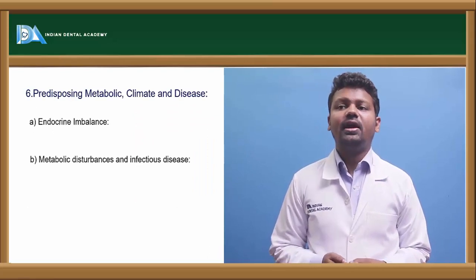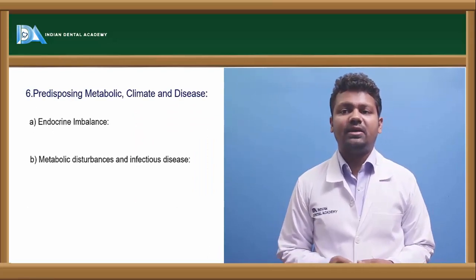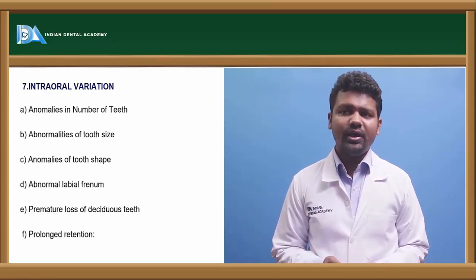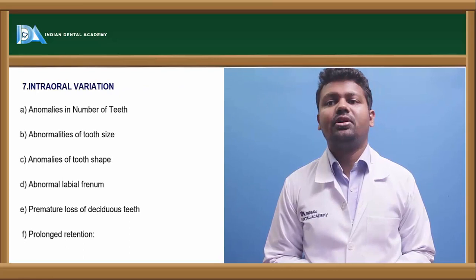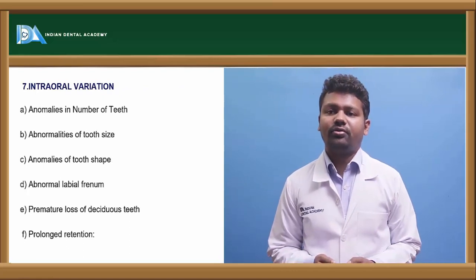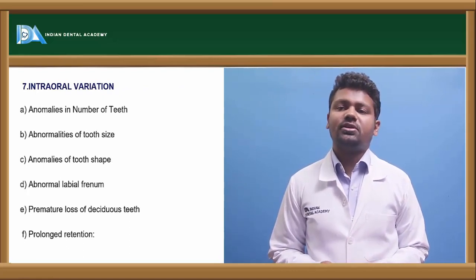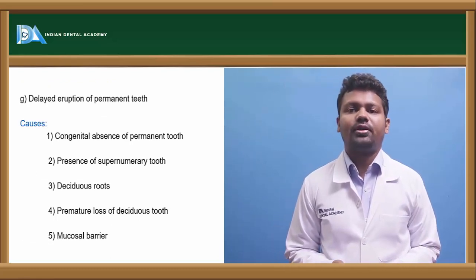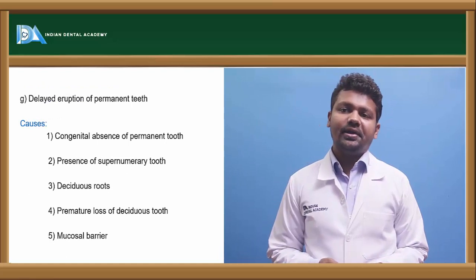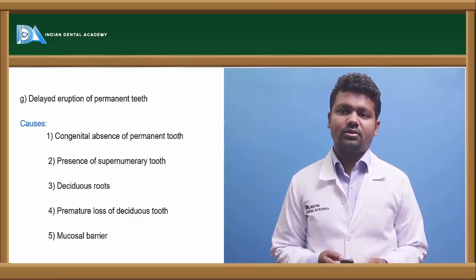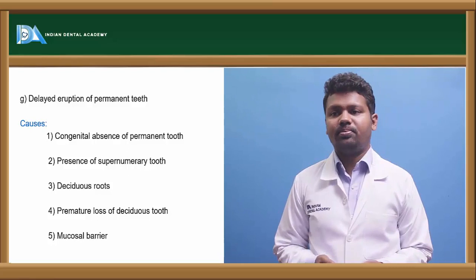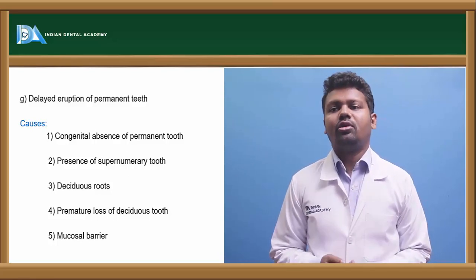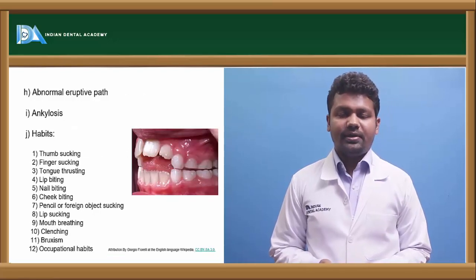Predisposing metabolic climate and disease: endocrine imbalance can cause metabolic disturbances and infectious diseases. Intraoral variations include anomalies in the number of teeth, abnormalities of tooth size, anomalies in tooth shape, abnormal labial frenum, premature loss of deciduous teeth, prolonged retention and delayed eruption of permanent teeth. Causes also include congenital absence of permanent teeth, presence of supernumerary teeth, retained deciduous roots, premature loss of deciduous teeth, and mucosal barrier.